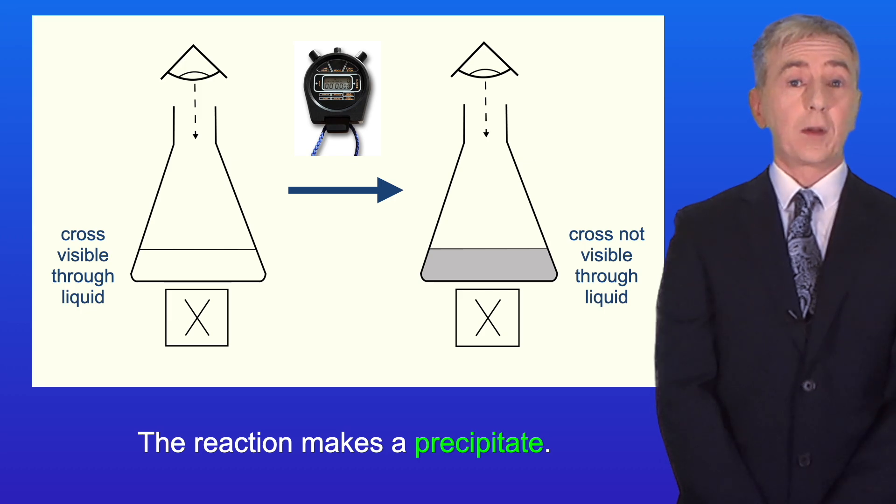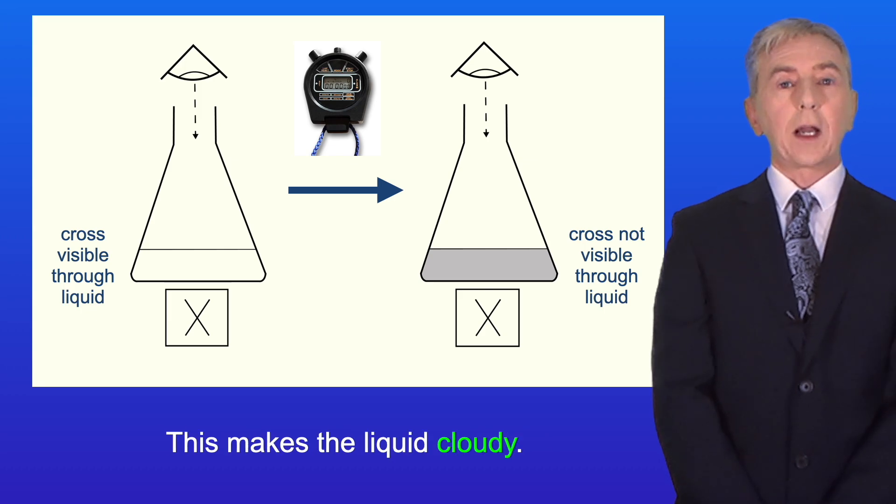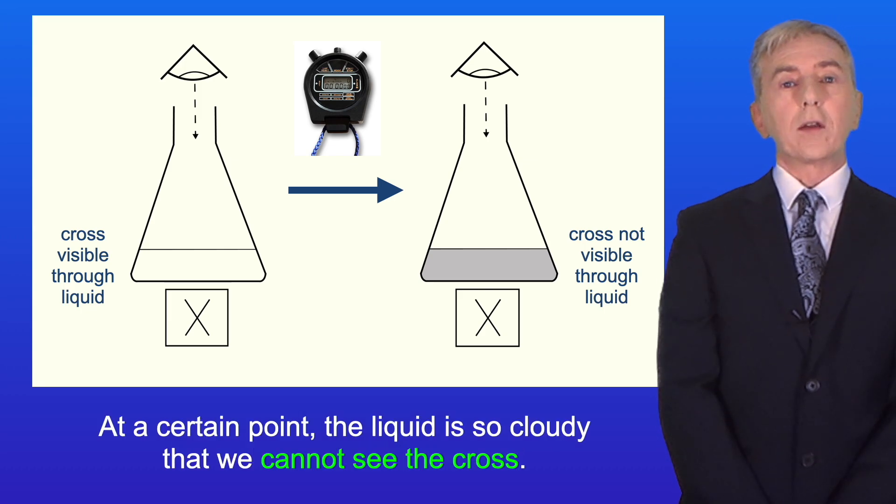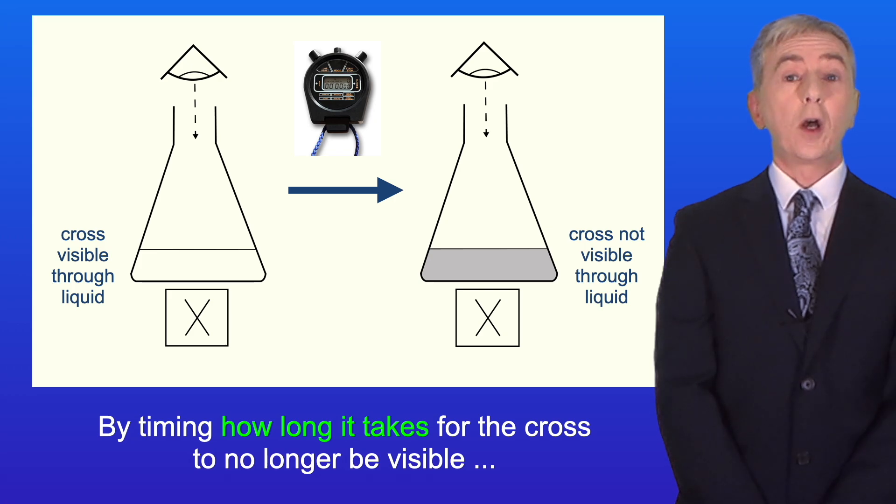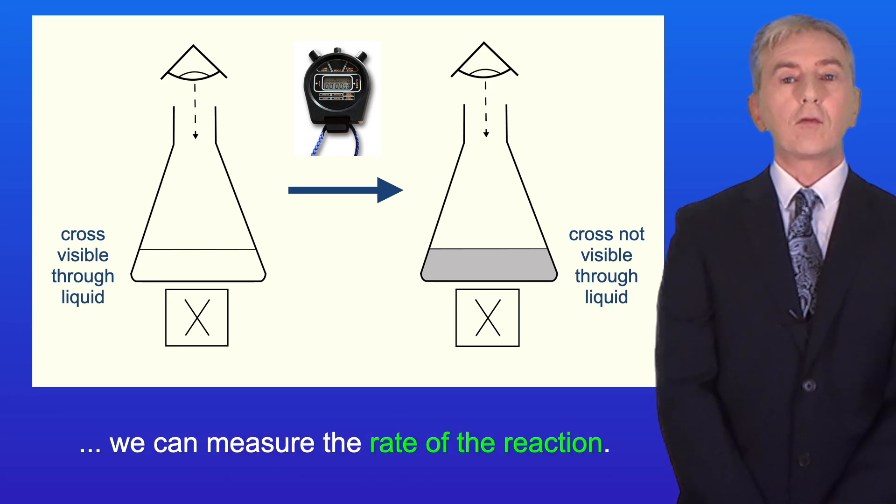The reaction makes a precipitate and this makes the liquid cloudy and at a certain point the liquid is so cloudy that we cannot see the cross. By timing how long it takes for the cross to no longer be visible we can measure the rate of the reaction. We can then change the concentration of one of the reactants and carry out the experiment again.